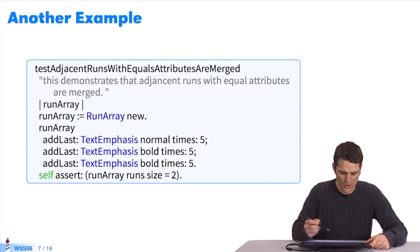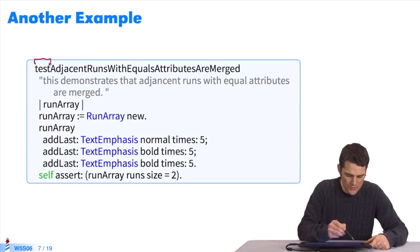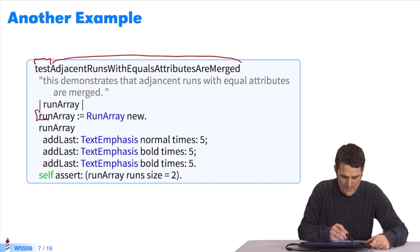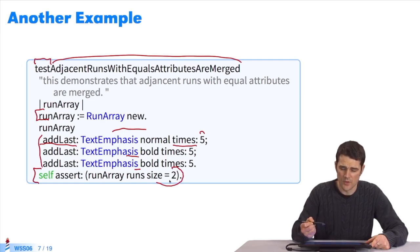I'll give you another example. In this example, we have the Test method, its name begins with Test in lowercase. Adjacent runs with equals attributes are merged. So we have the context here, we've created an object. Here we have a stimulus. We've tried to send the message AddLastTimes to this object three times, the first time with the settings here, and a second time, the same settings, the second and third time. We test here, it's the check that this element is size 2. We weren't able to add the same element several times adjacently.